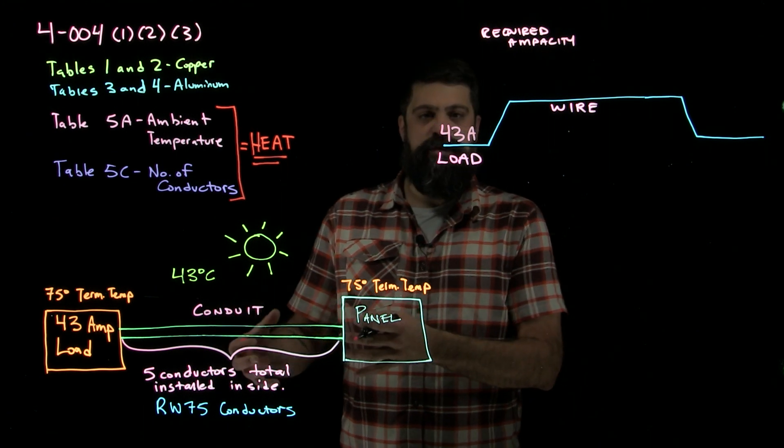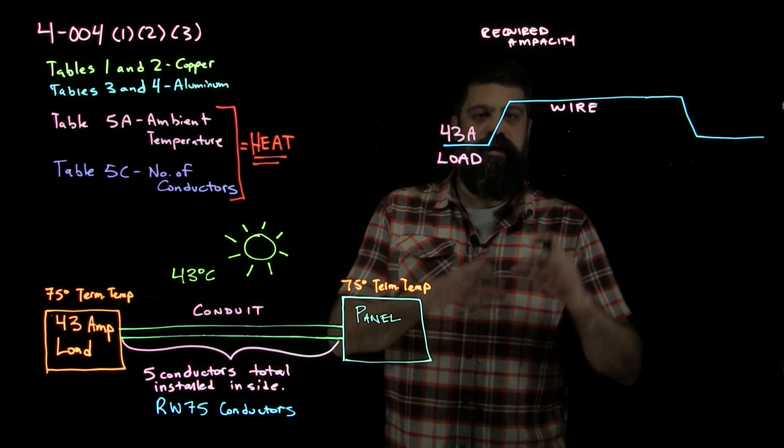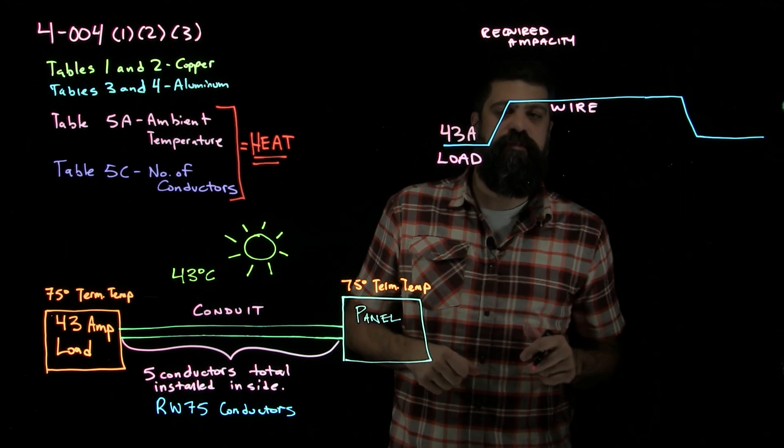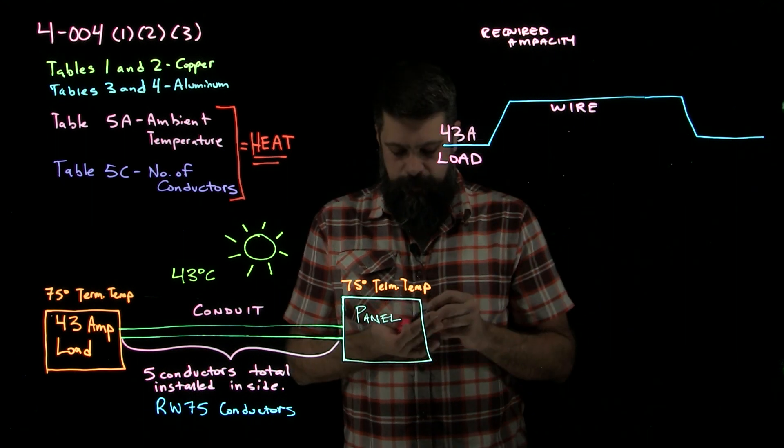So this 43 amp load, because of the conditions that are there, I need to figure out these things that we call derating factors. That's where we put the derating factors from table 5A and 5C in.